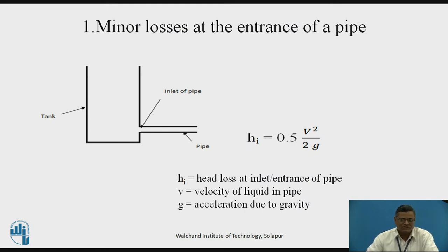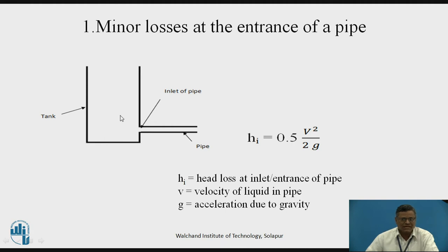Let us see one by one the different types of losses. The first one is the minor losses at the entrance of a pipe. We can see that here we have a tank and the pipe is connected to it. This section is where the pipe is connected to the tank — the entrance or inlet of a pipe. The loss at the entrance is given by the formula: head loss at inlet equals 0.5 × V²/2g, where V is the velocity of the liquid in the pipe. The velocity of the liquid in the tank is zero, so when it enters the pipe, the fluid particles gain velocity and that pipe velocity is used for the calculation.